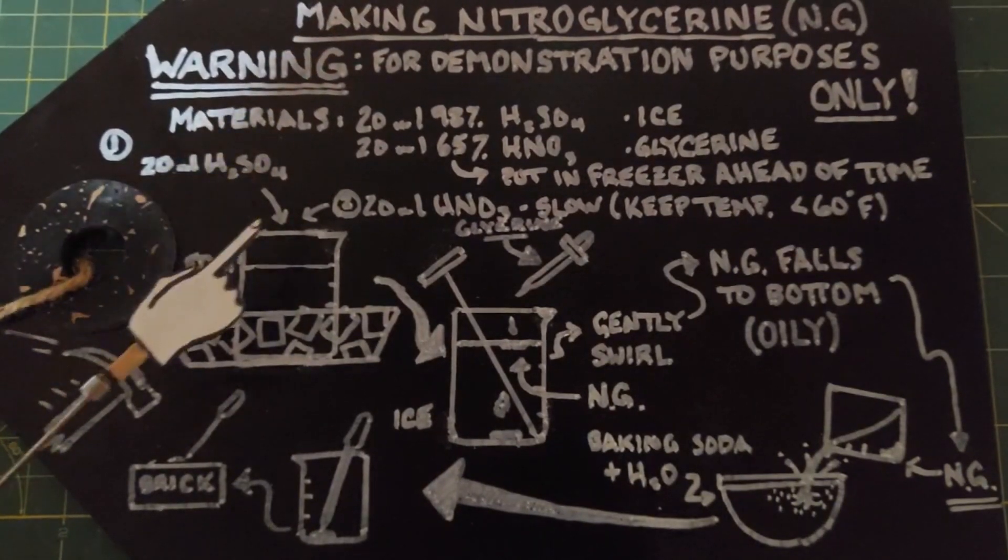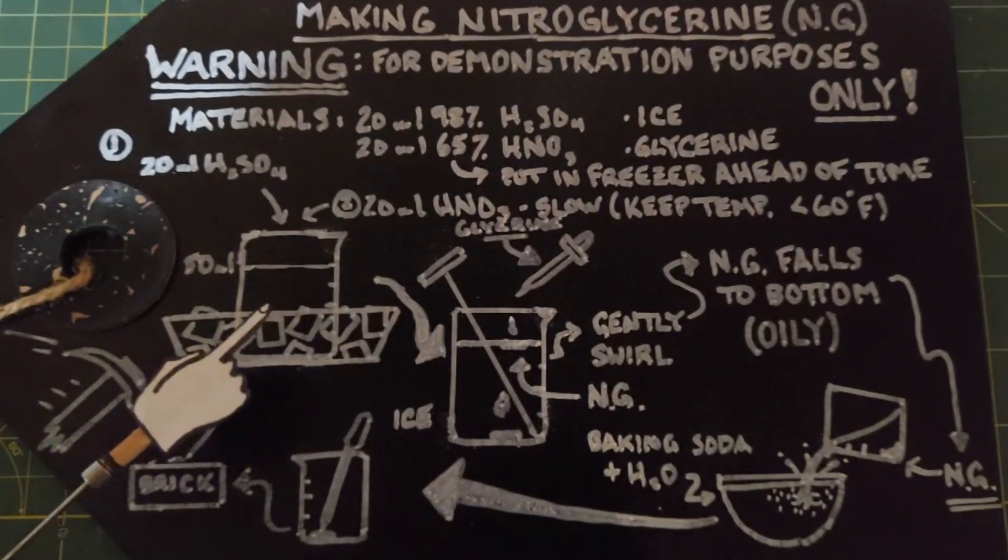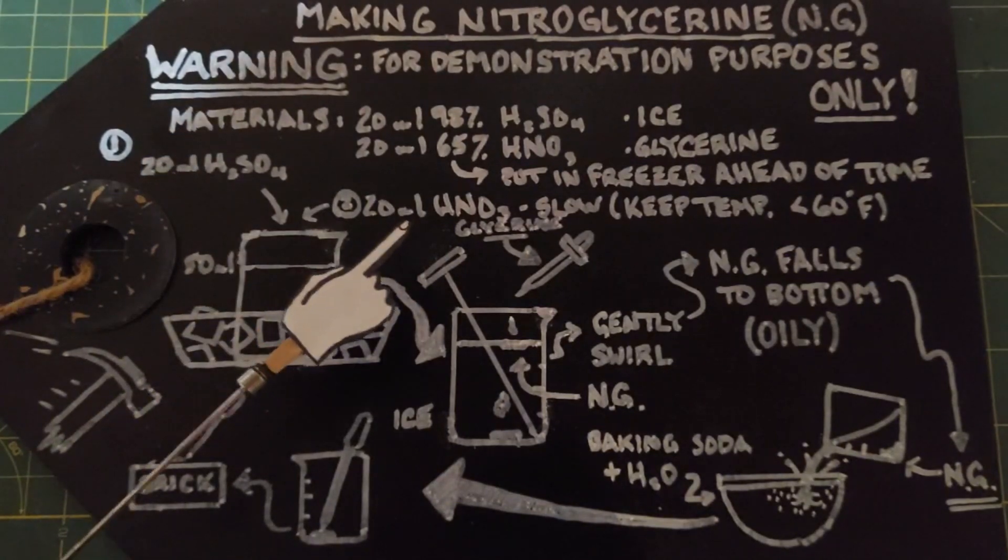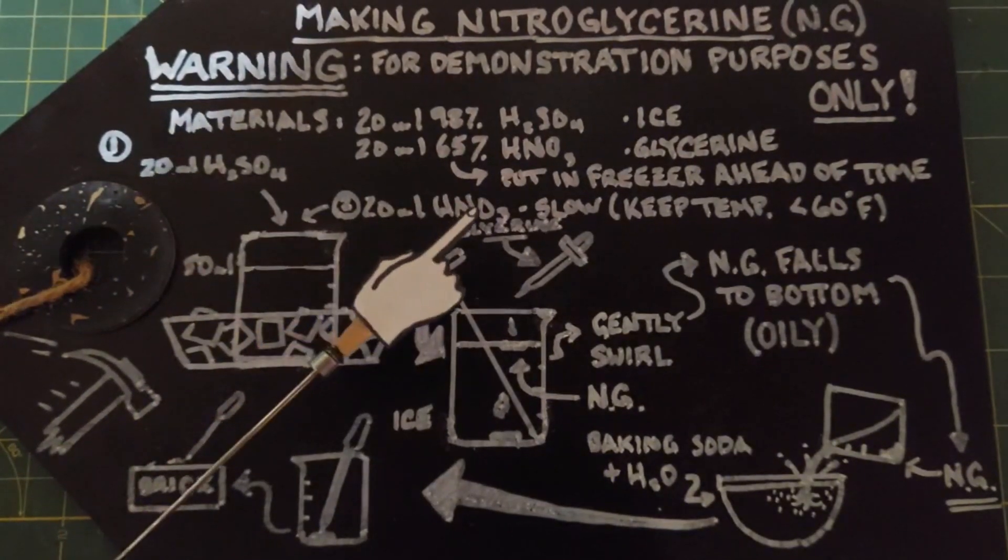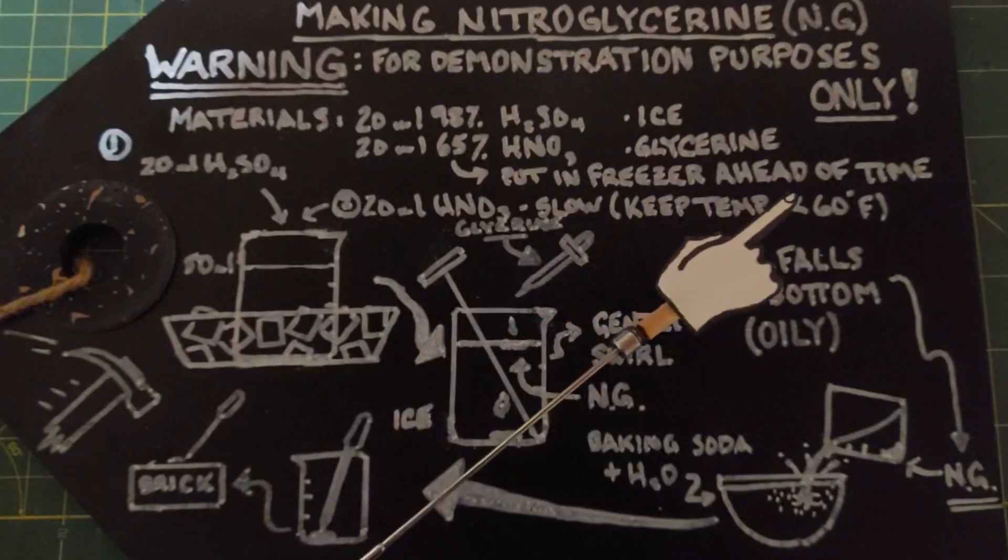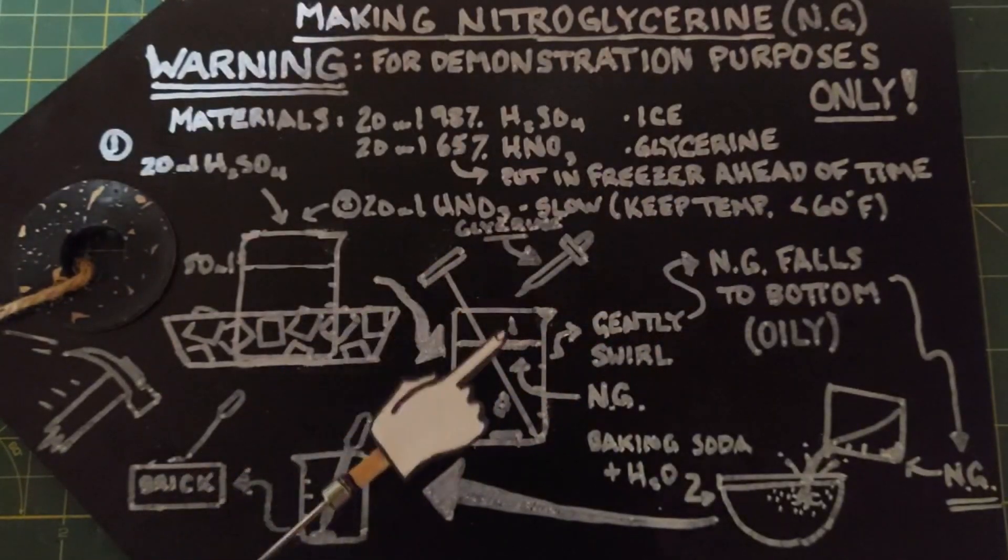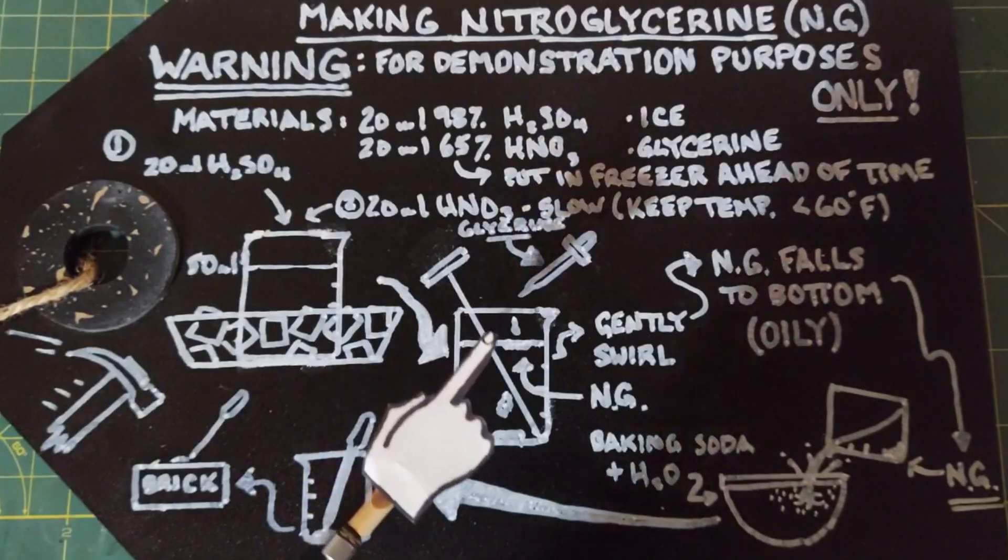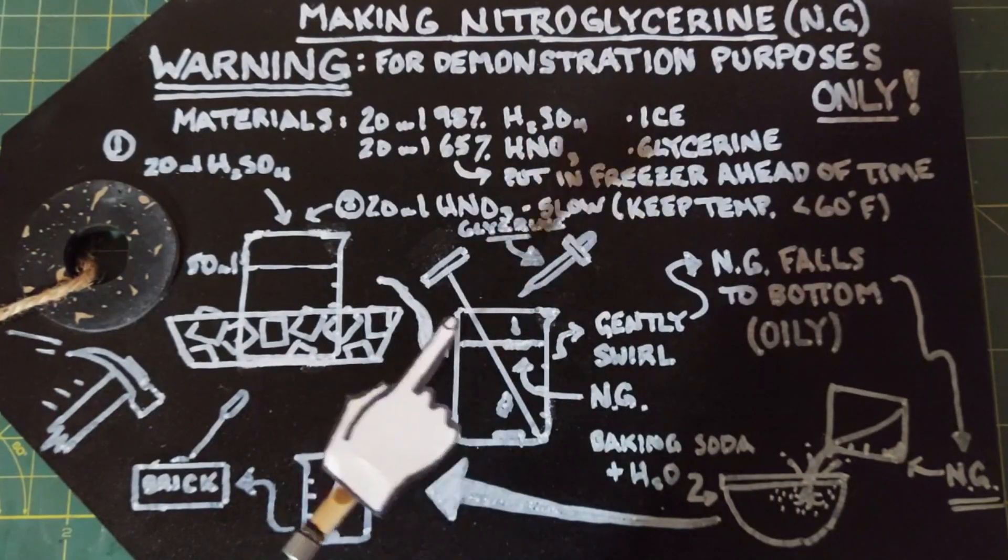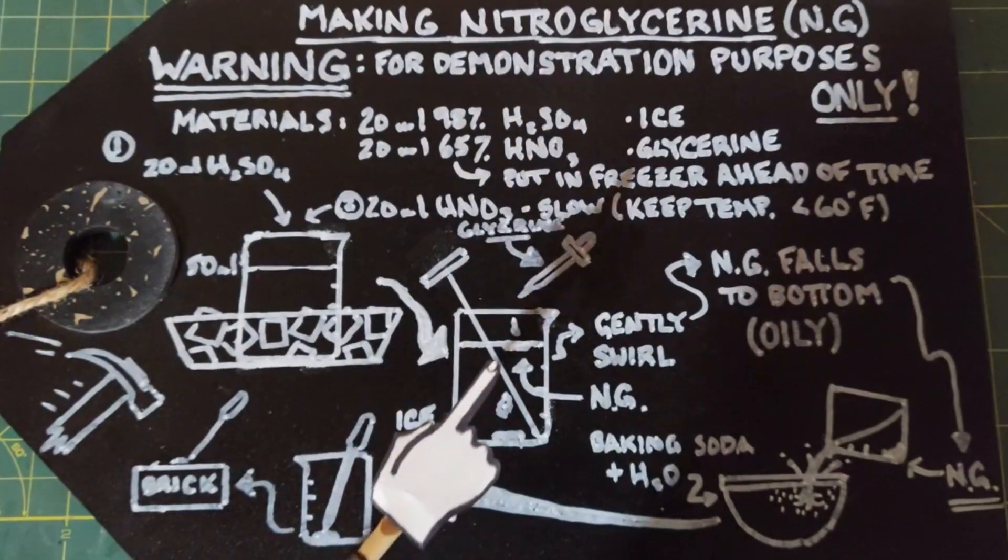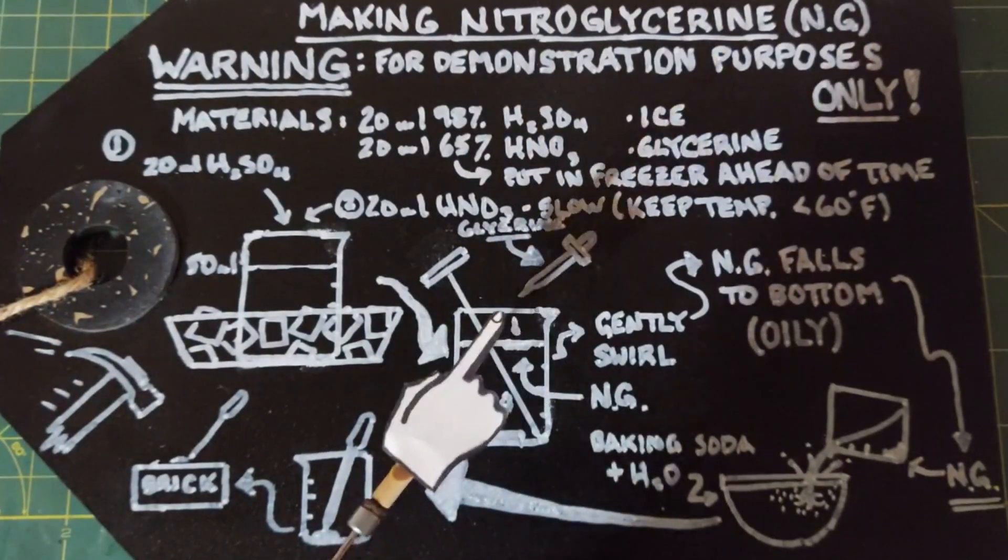As both of these will just have come out of the freezer, start by adding 20 milliliters of sulfuric acid in the beaker here and then afterwards slowly add 20 milliliters of nitric acid and keep the temperature under 60 degrees. That's what this is right here is a thermometer. Once you are done adding the nitric acid, let it sit for a bit until everything is cooled down really well and then start adding your glycerin drop by drop.